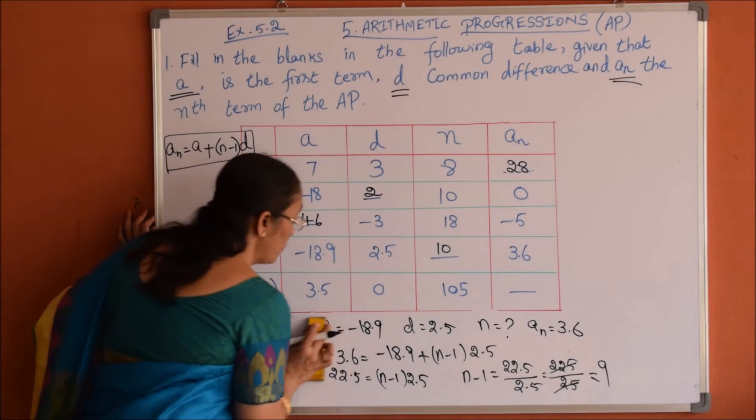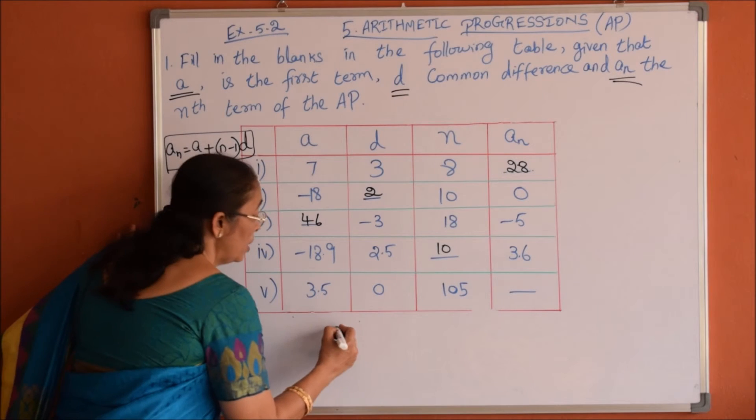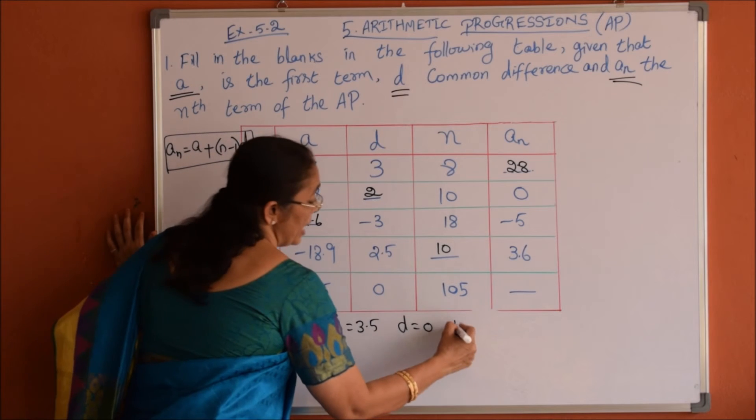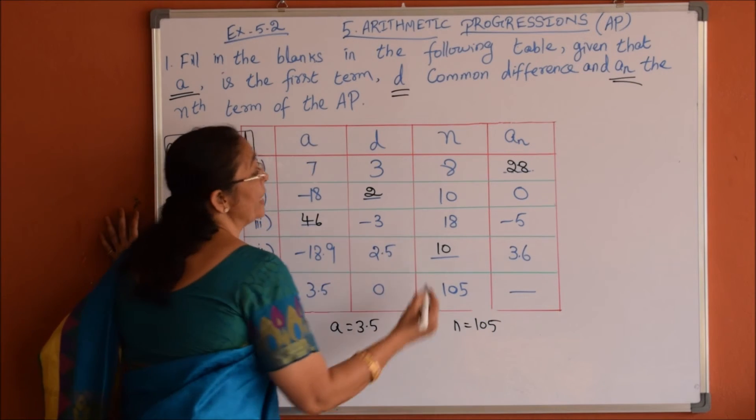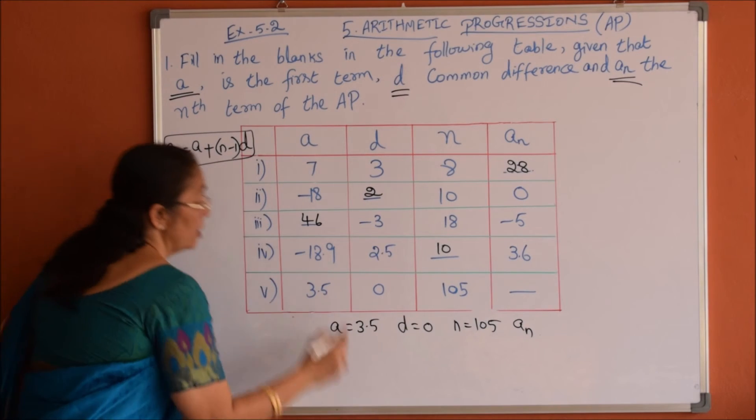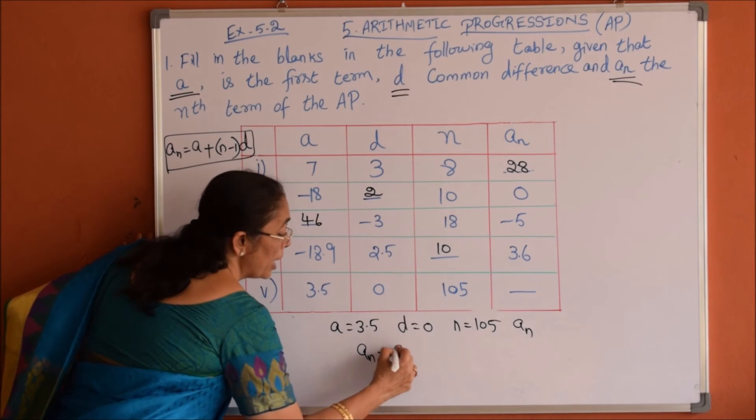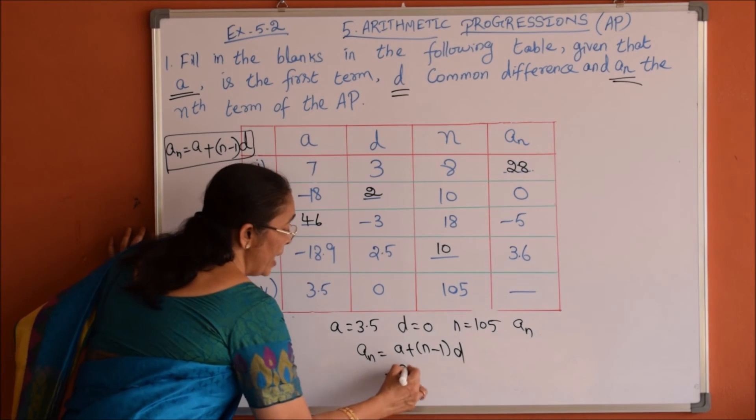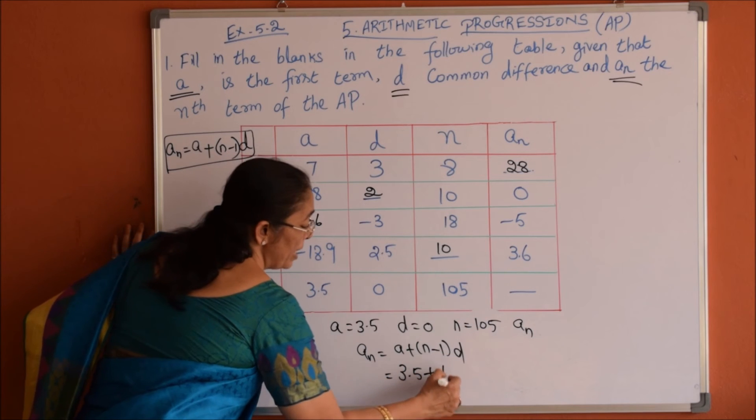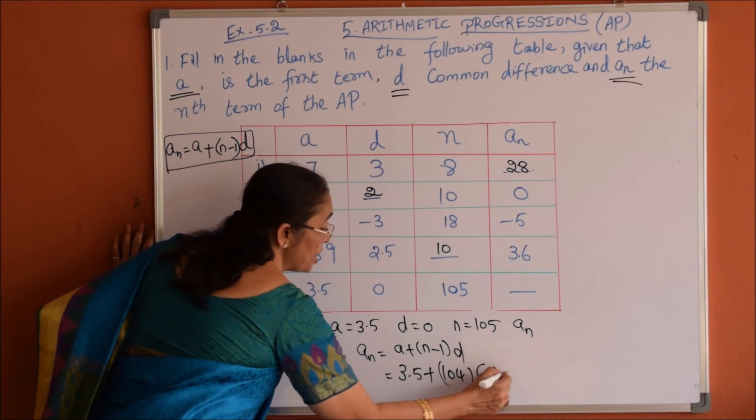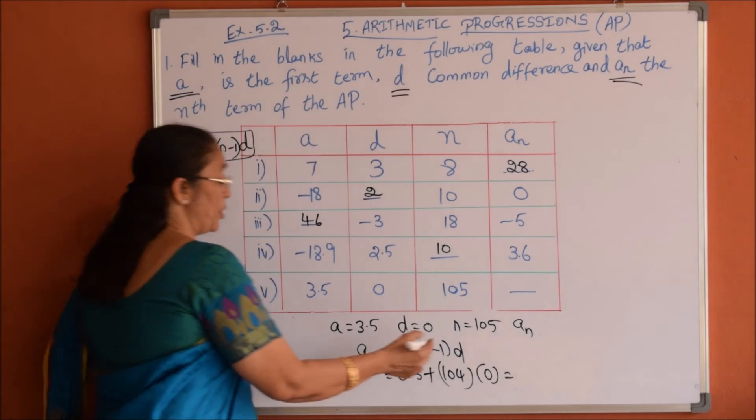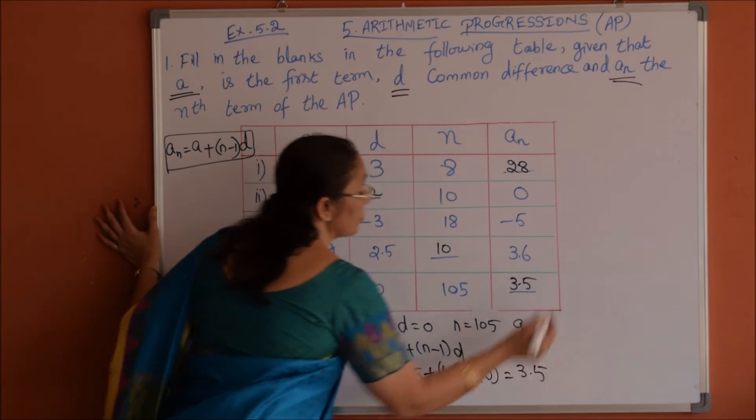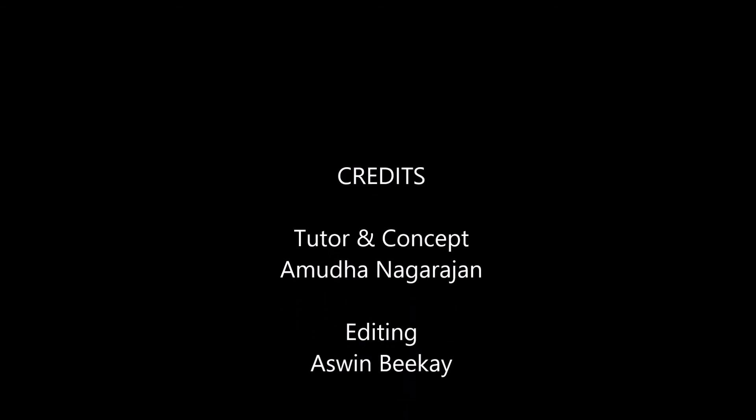For the fifth problem, a is 3.5, common difference is 0, and n value is 105. We have to find An. Using the formula, An equals a plus (n minus 1) times d, which is 3.5 plus 104 times 0. Since 104 times 0 is 0, the nth term is also 3.5.